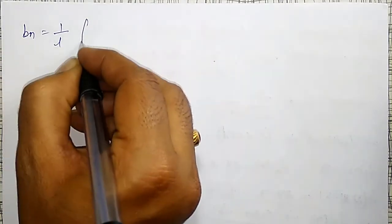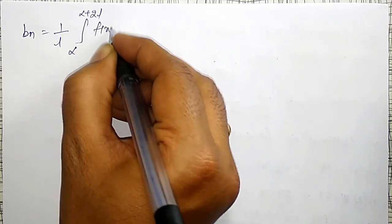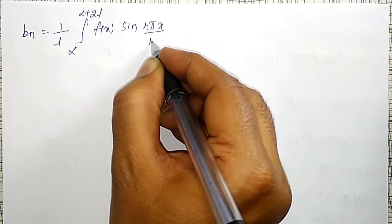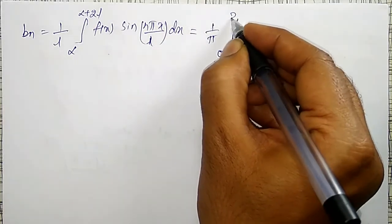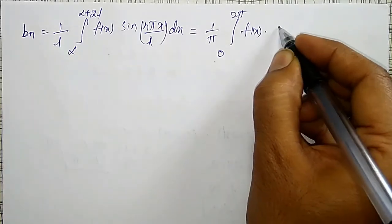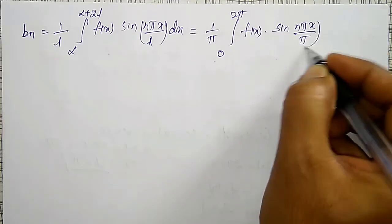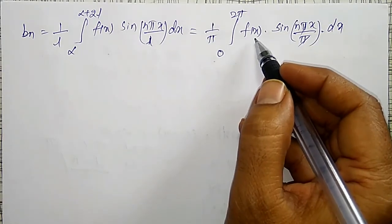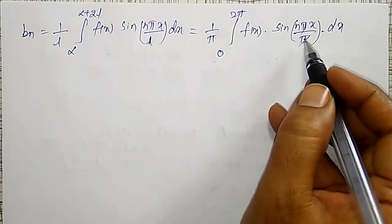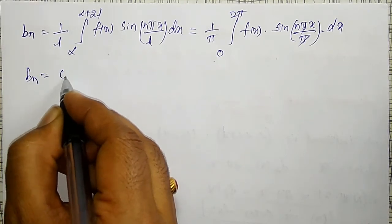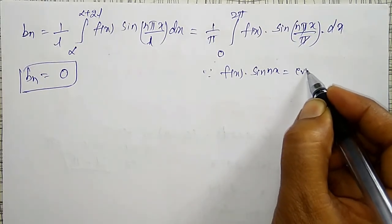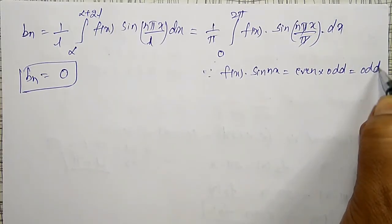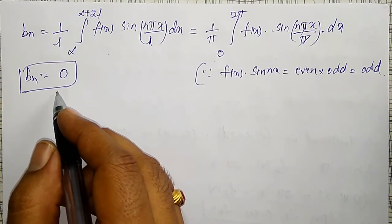Next, the Fourier coefficient bₙ is defined as (1/l) × integral from α to α+2l of f(x) sin(nπx/l) dx. Substituting, this becomes (1/π) × integral from 0 to 2π of f(x) sin(nx) dx. Since f(x) is an even function and sin(nx) is an odd function, even times odd is odd. Therefore, bₙ = 0, using the property of integration over a symmetric interval.